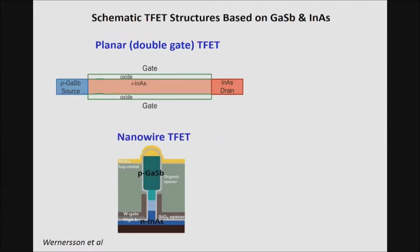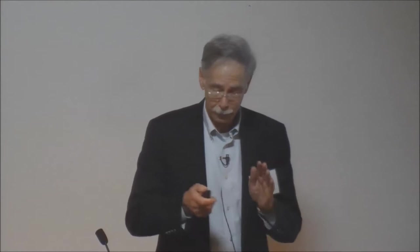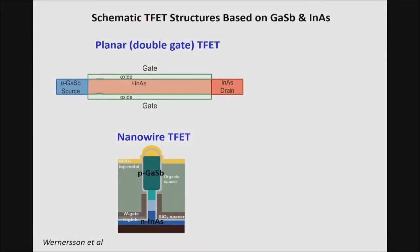The structures I'd like to describe have to do with heterojunction tunnel FETs based on gallium antimonide and indium arsenide-type systems, which offer controllable bandgap at the heterojunction and are very promising for future production. These can be used in either planar double-gate structures or in a nanowire-type structure.